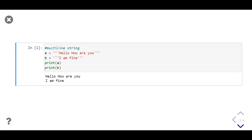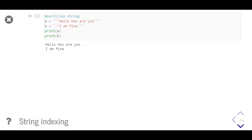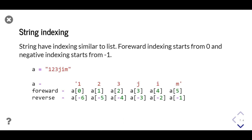Indexing in a string is similar to a list. Forward indexing starts from zero and negative indexing starts from minus one but in reverse direction. You can see the mapping below.